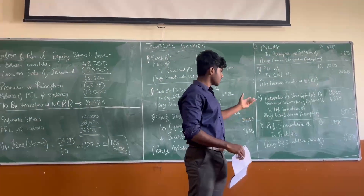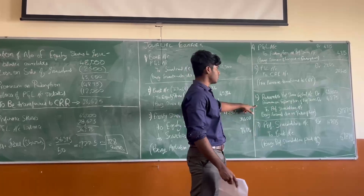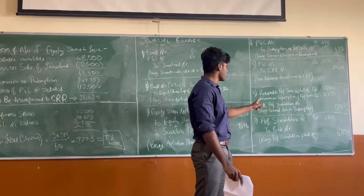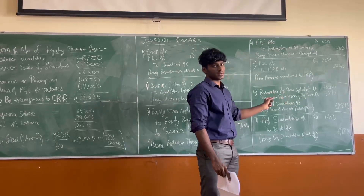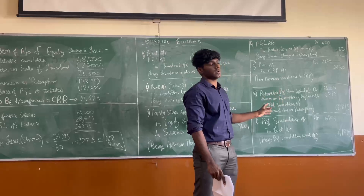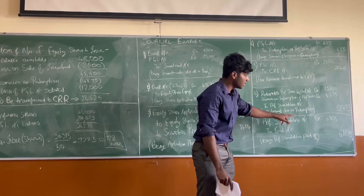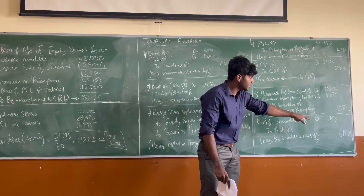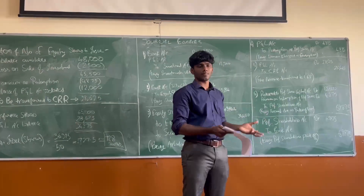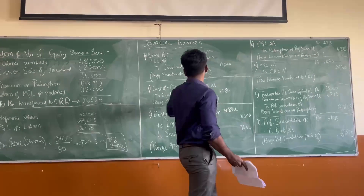This is the final journal entry, which deals with the actual redemption of preference shares. Redeemable Preference Share Capital account is debited 65,000 (face value), and Premium on Redemption of Preference Shares account is debited 4,875. These are credited to the Preference Shareholders account, creating a liability. Then, the Preference Shareholders account is debited, and Bank account is credited — recording the actual cash payment made to the preference shareholders. Thank you.